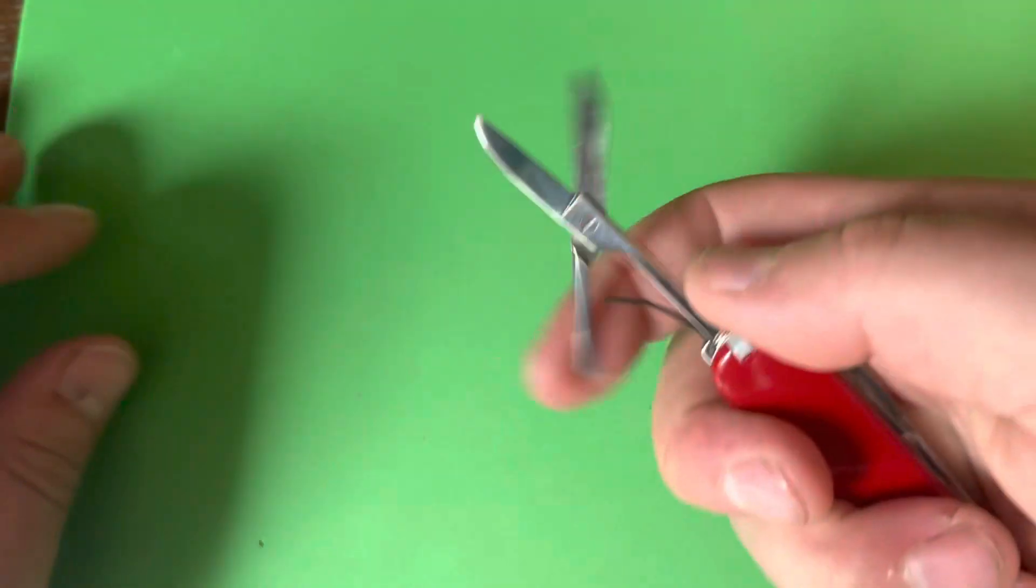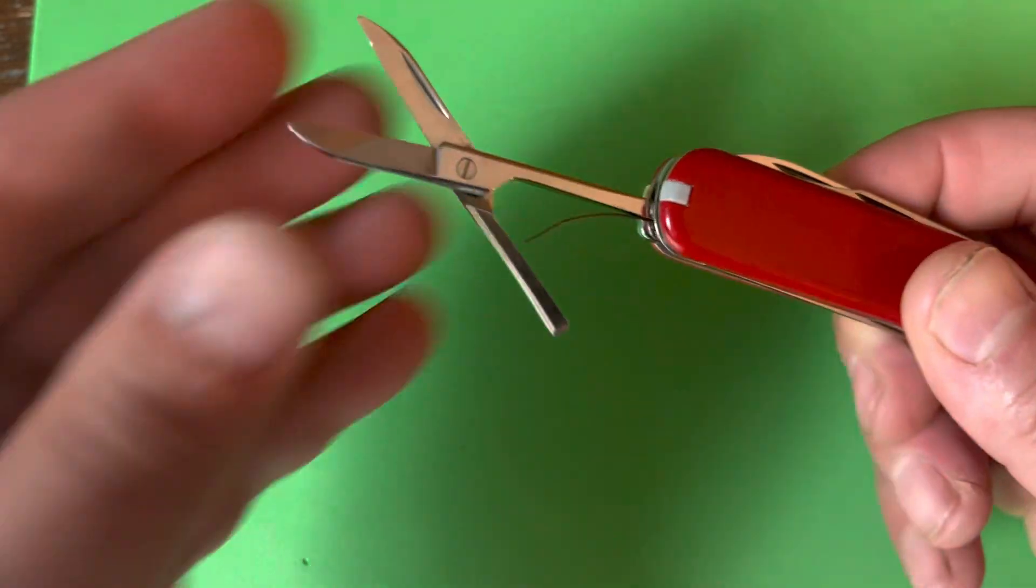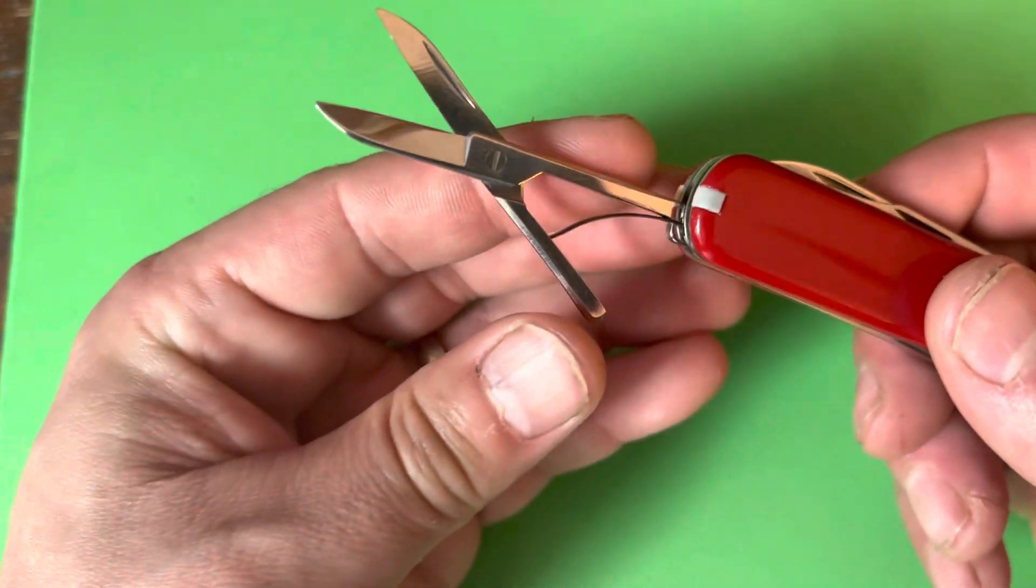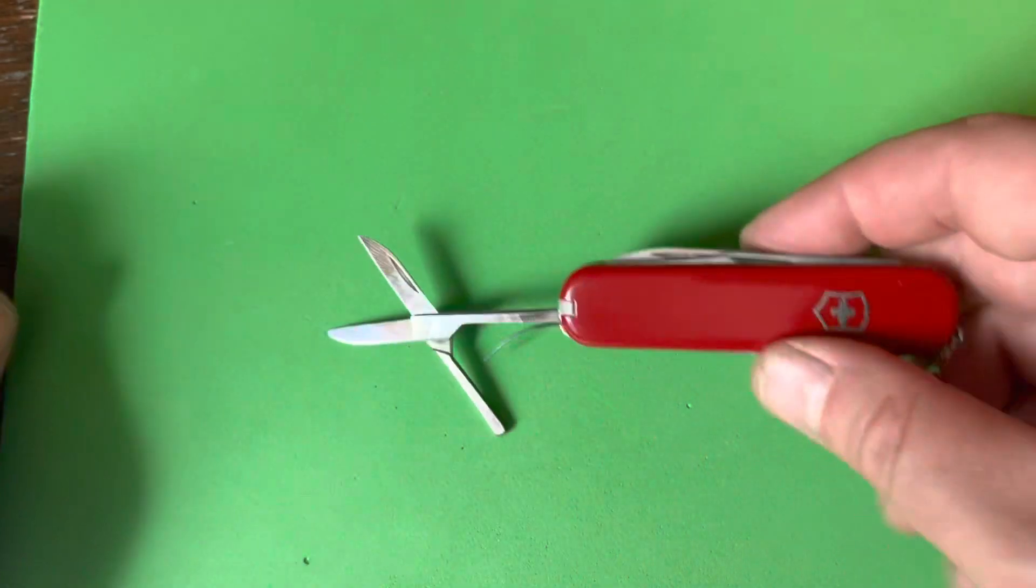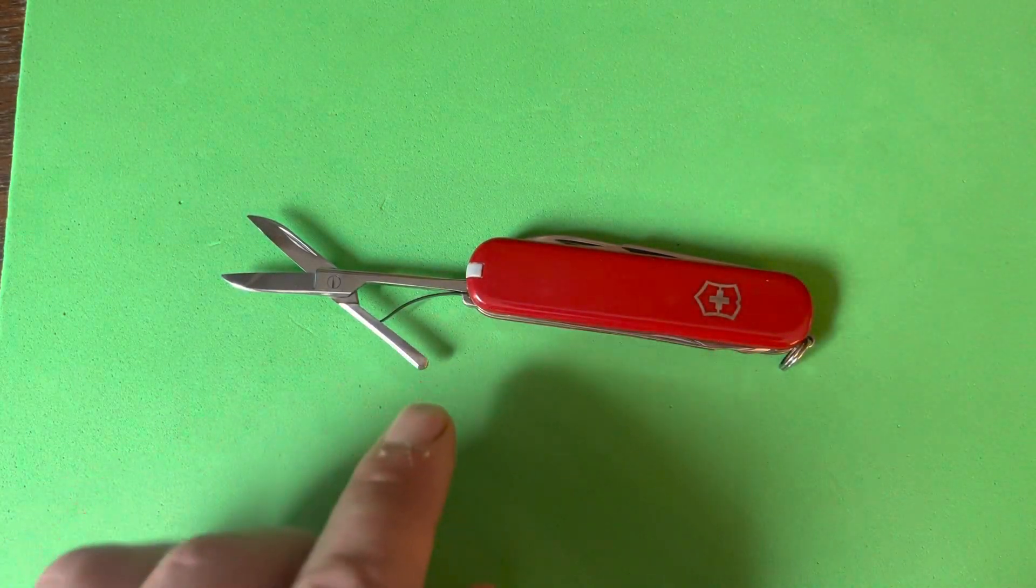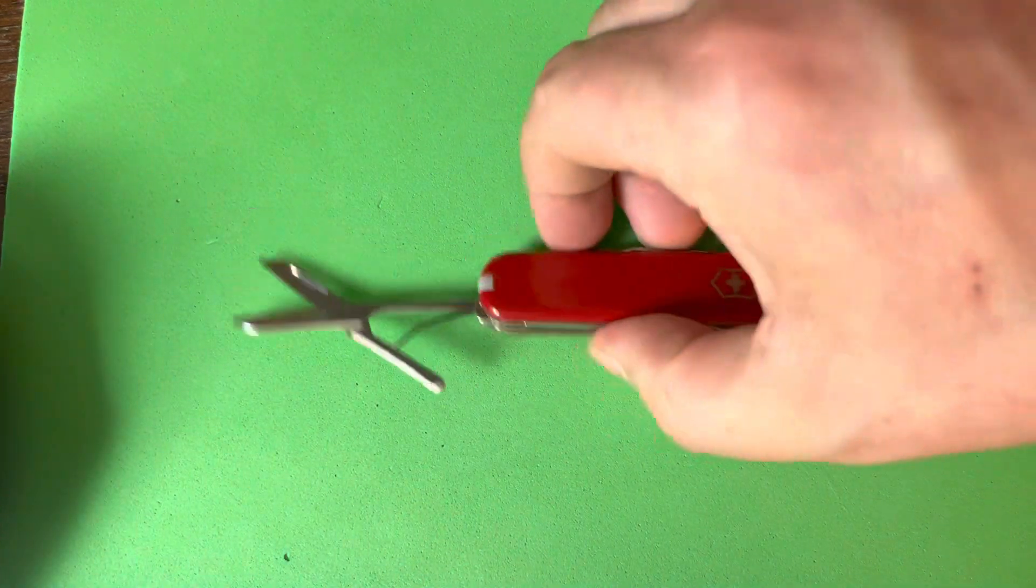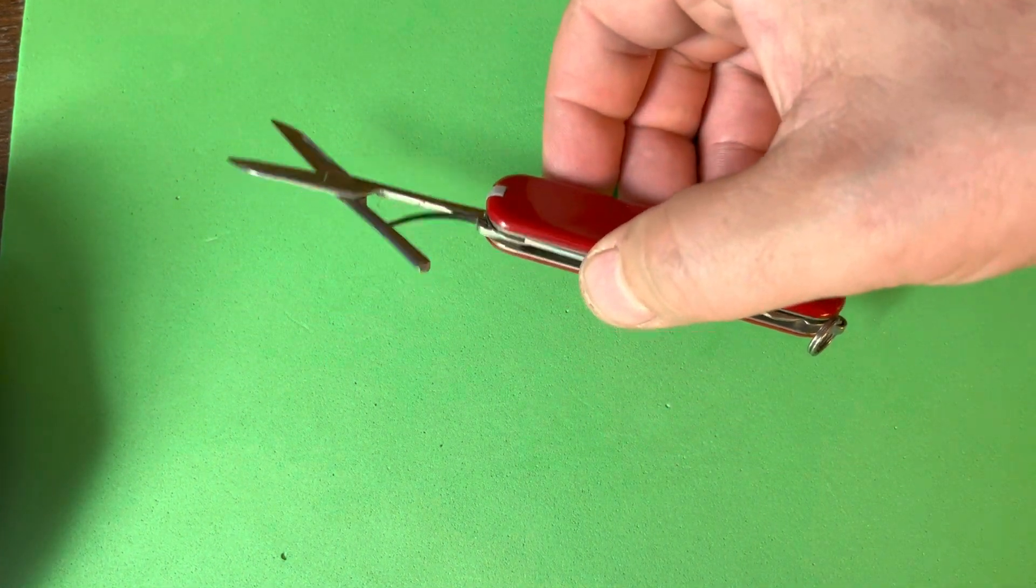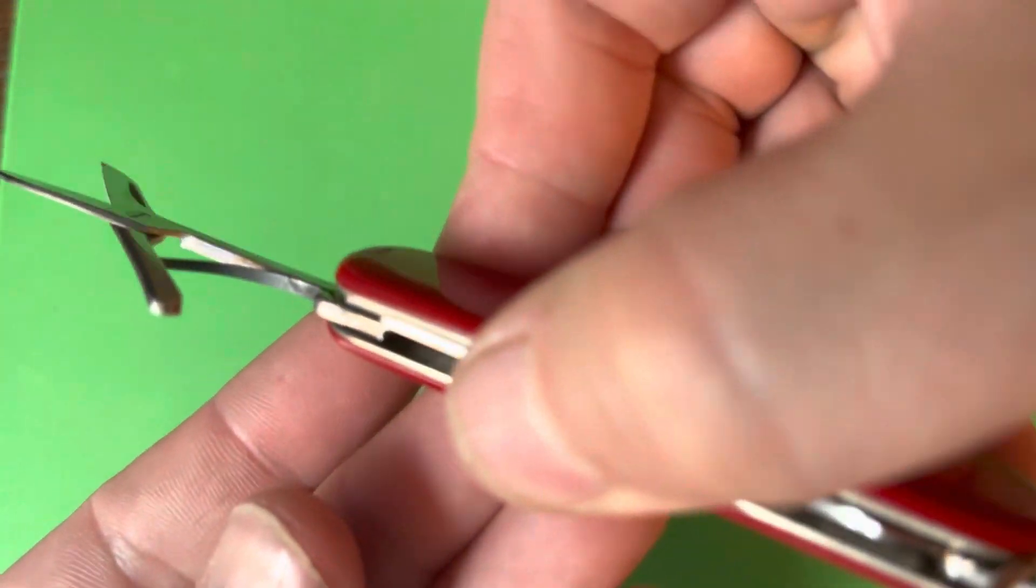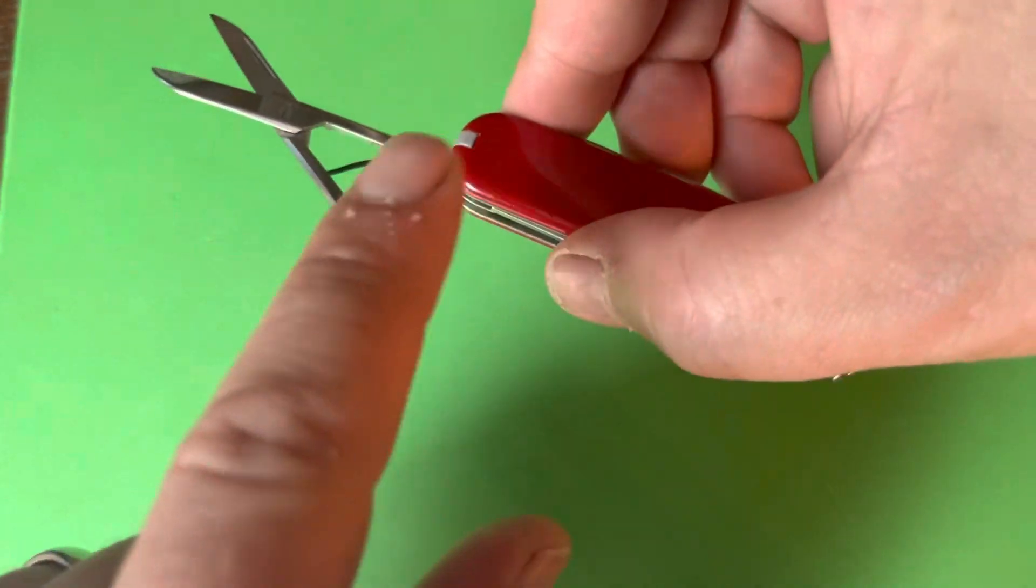You also get the scissors. This is a really nice pair of scissors - it's got a great spring. The spring is, I guess, one of the ways that you can date this particular model or this version, because it's a single leaf spring and it is actually not a stainless steel spring - it is a carbon spring.